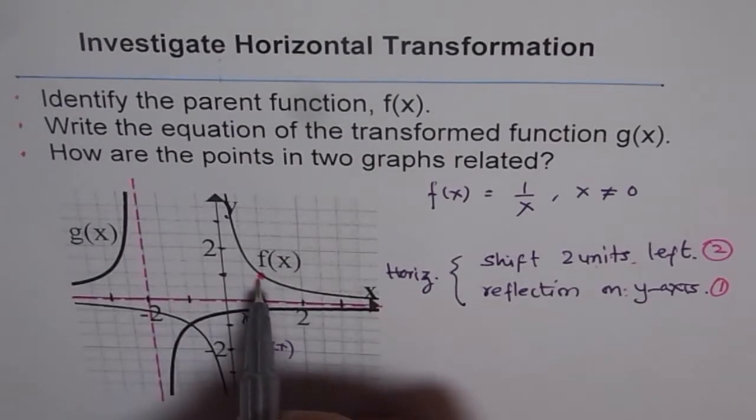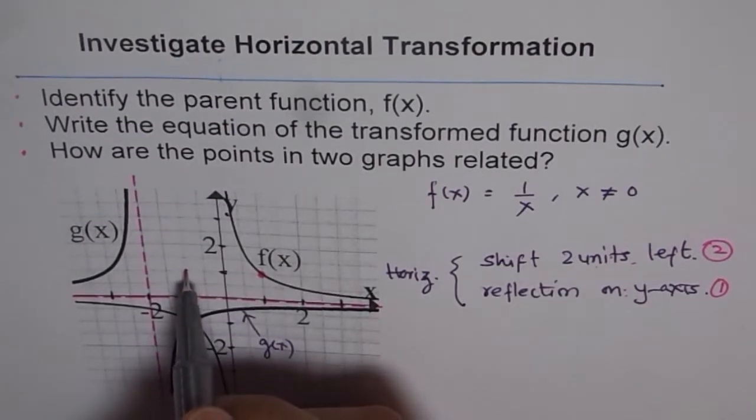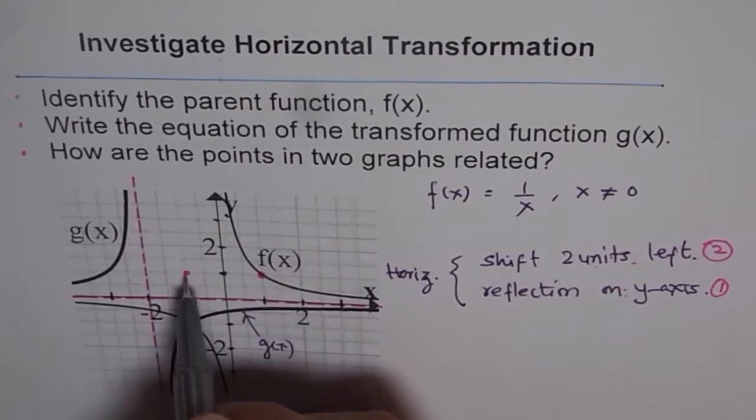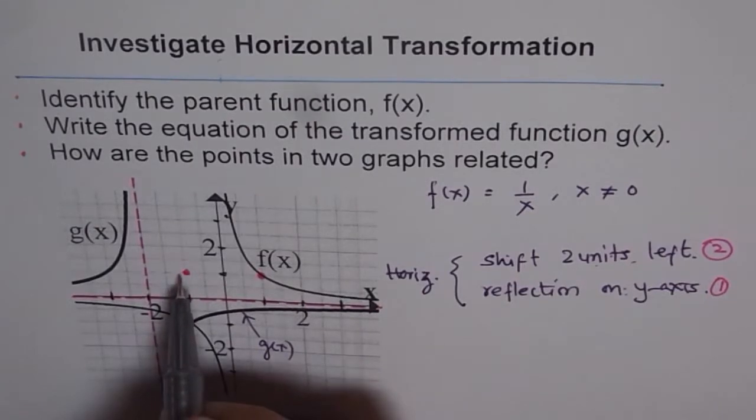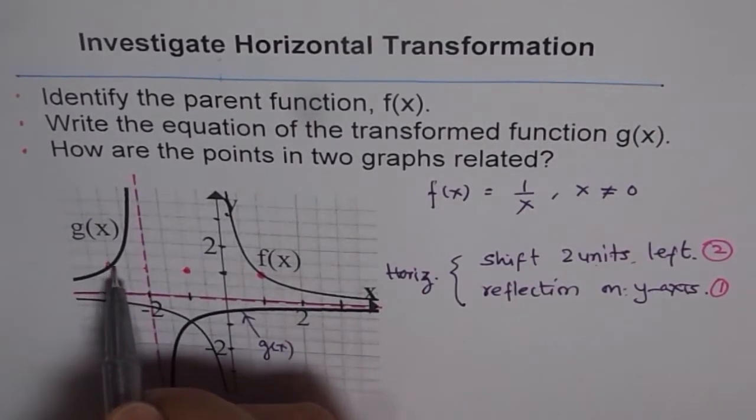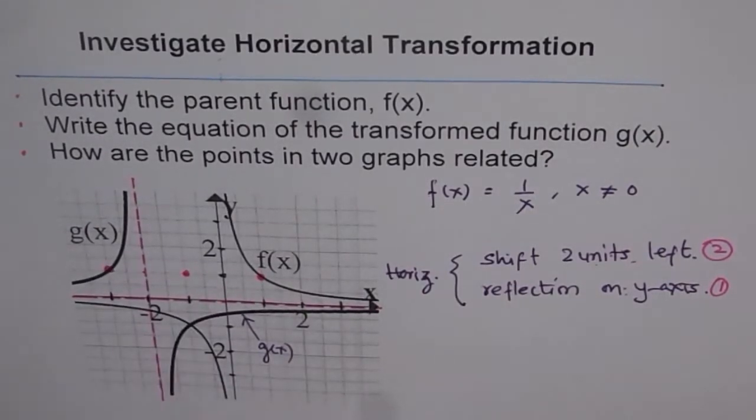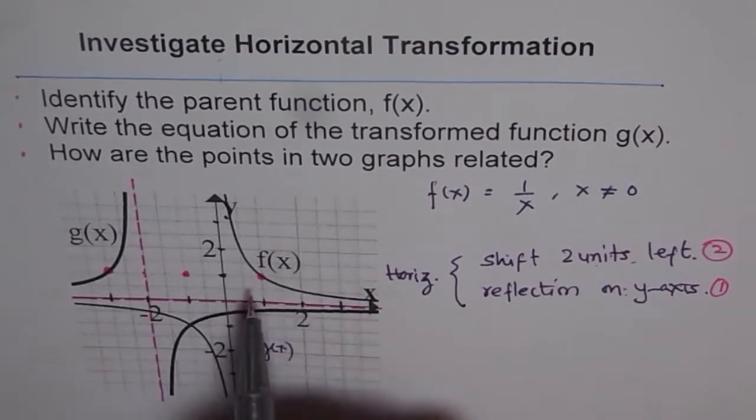And so of course this will come to this side, right? So (1,1) reflected to this side, and then you say there is a shift of two units. If I move two units, one and two, I reach the point perfect.